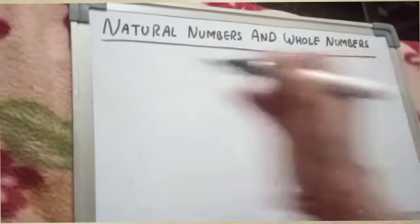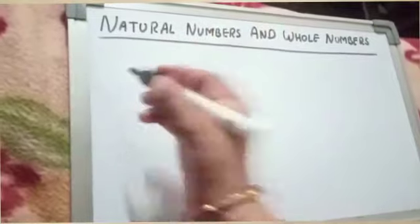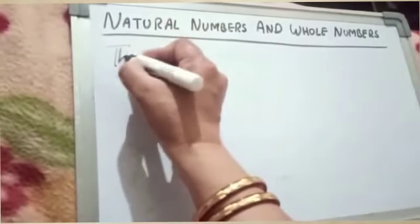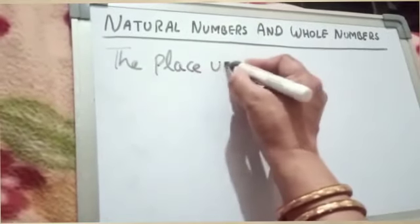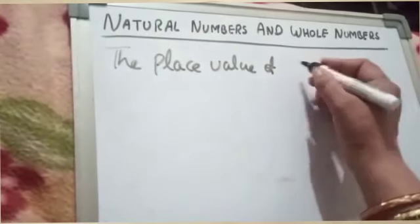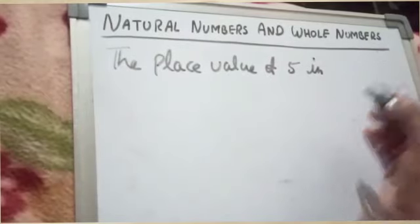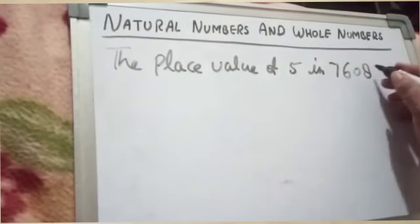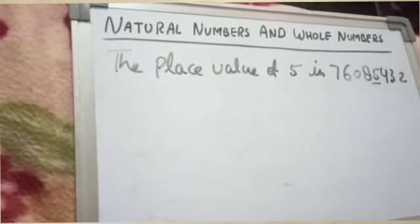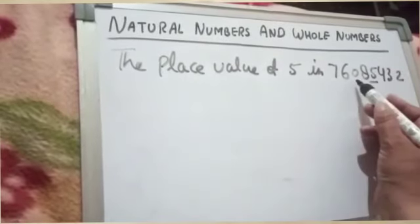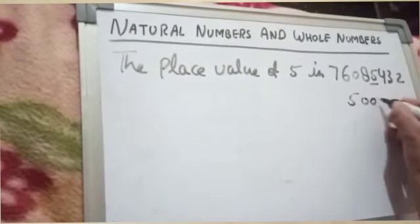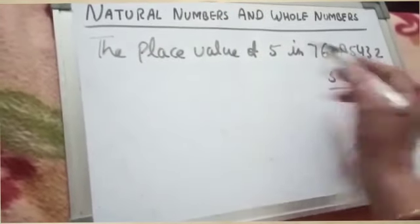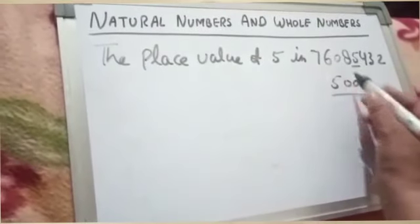Now we start with another example. We will find the product of the place value and the face value. I am taking an 8-digit number. The place value of 5 in this 8-digit number is 5,000, because 5 lies at the 1,000th place.